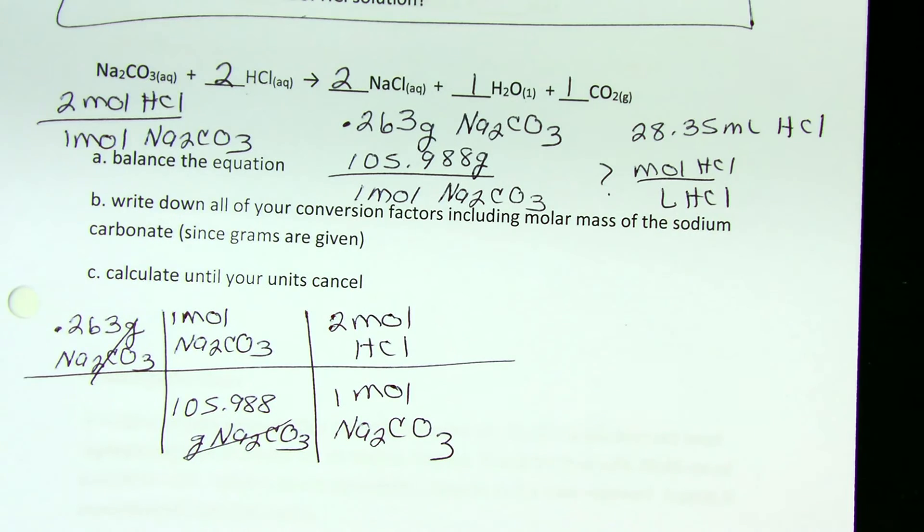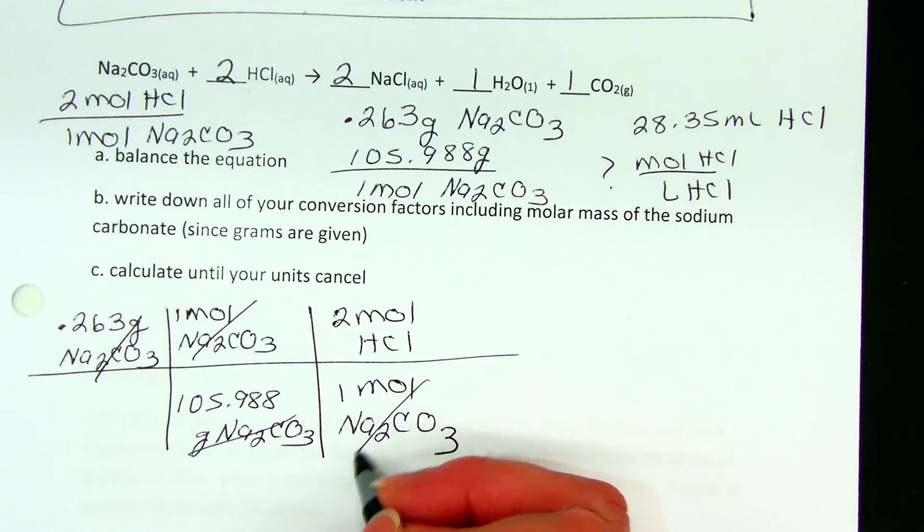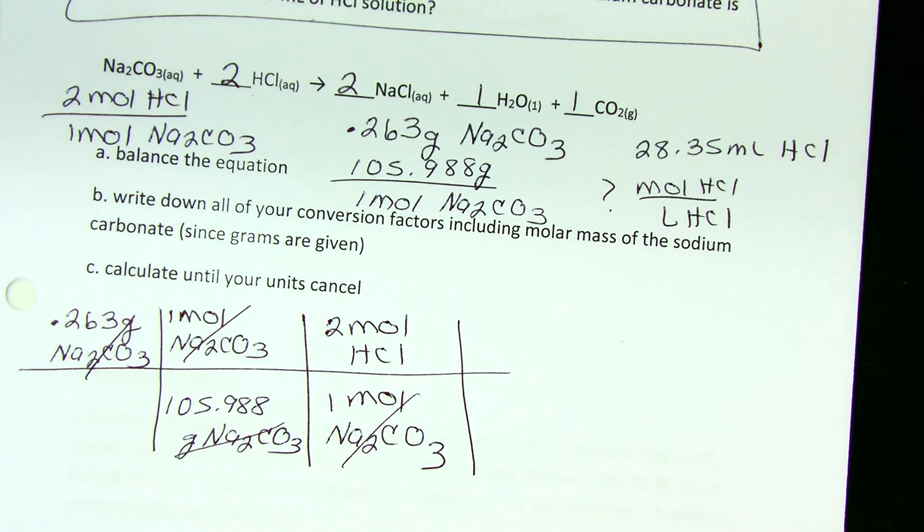Now I want my answer in moles of HCl per liter, so what's next? My moles of sodium carbonate have canceled. What do I do next?